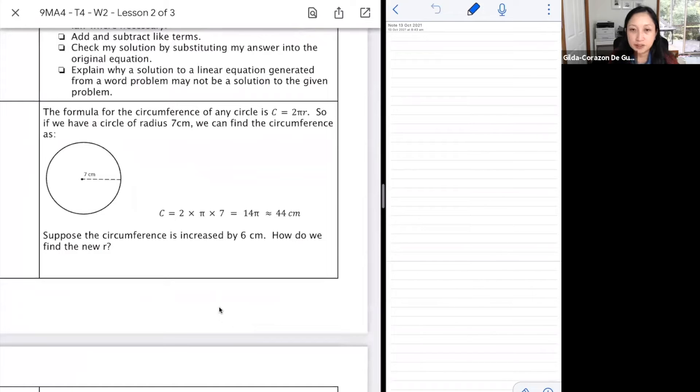The formula for the circumference of any circle is C equals 2πR. We've learned this in year 8 when we talked about measurements or perimeter, or what we call the length around a shape.